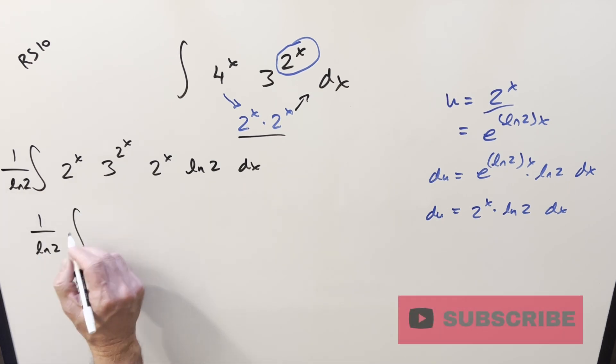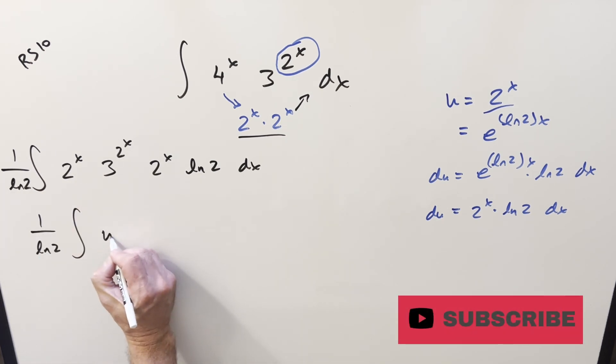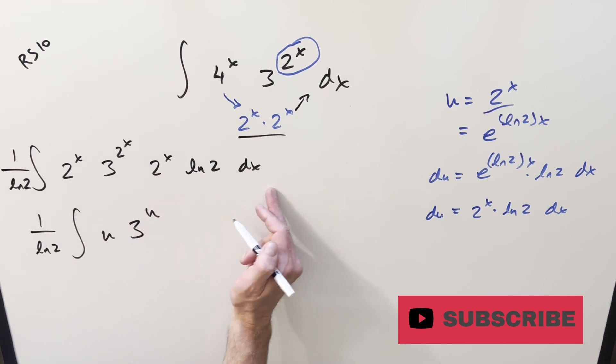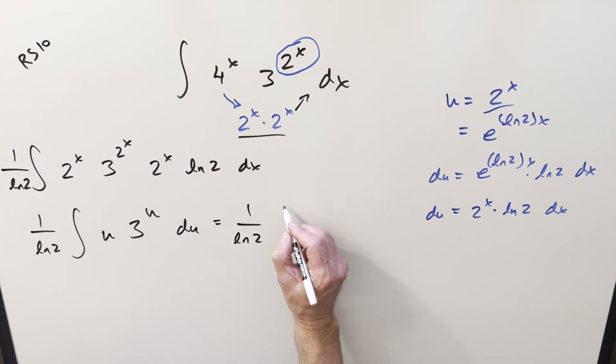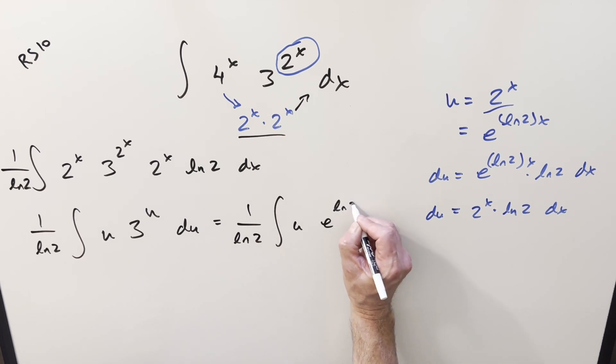So now we'll just go ahead and substitute, so we'll have our 1 ln 2 in front. This here we're saying is just going to be u, this is going to become 3 to the u, and everything else is just du. But now on this 3, let's use the same trick, and we'll just rewrite that, get the base to be e, because we like dealing with e better than we like dealing with 3. So this is going to become e ln 3 times u du.